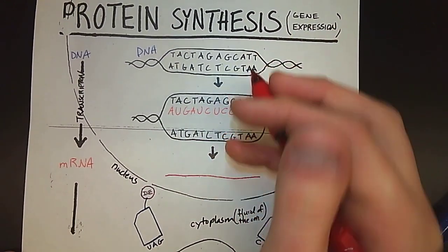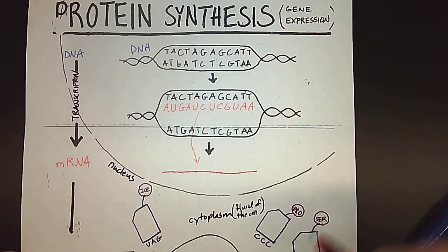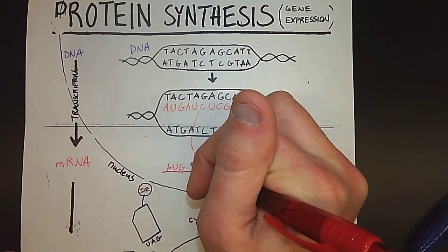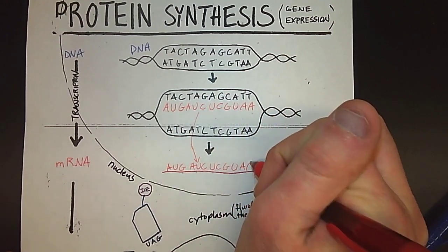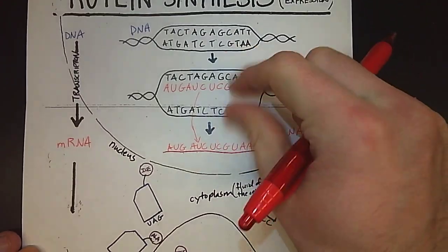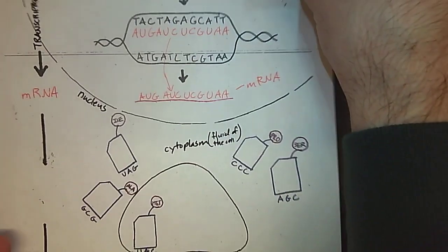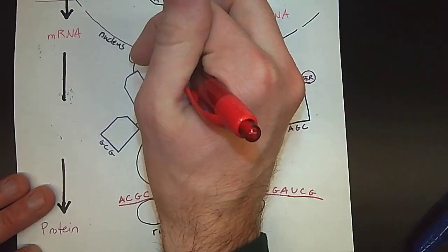And then what ends up happening is this RNA molecule ends up just leaving the DNA once it's been made. So I'm just going to rewrite it here. AUG, AUC, UCG, UAA. And that's my mRNA molecule. And the DNA is eventually just going to zip right back up. So now once we have our mRNA molecule, the DNA could stay in the nucleus.